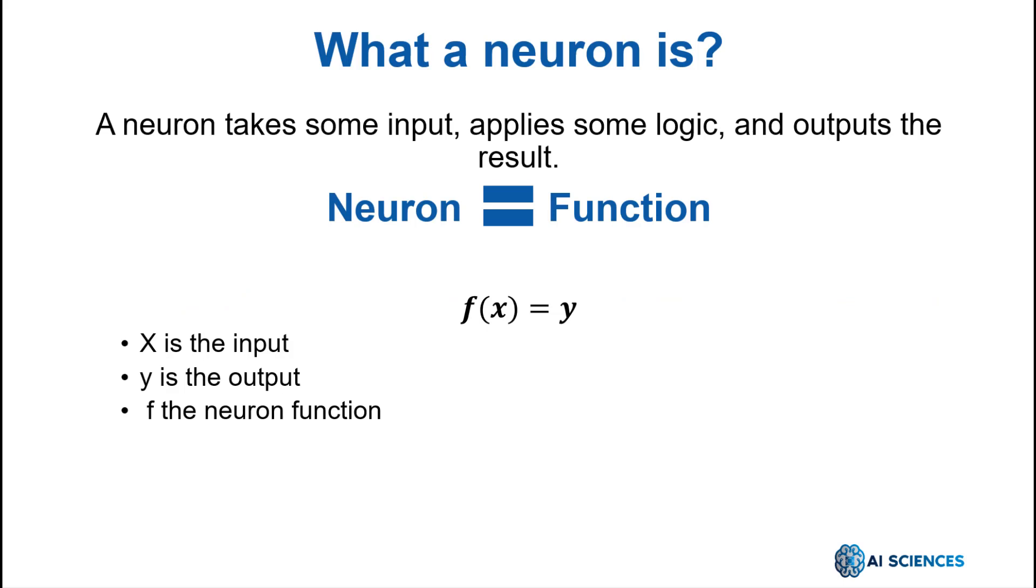First though, let's see what a neuron is. A neuron in the neural networks field is something that takes some input, applies some logic, and outputs the result. We call it a function. For example, if we have f(x) equals y, x is the input, y is the output, and f is a function.